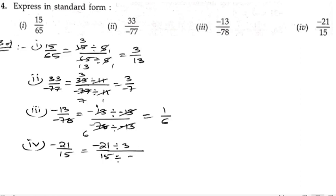3 ones are 3, 7s are 21. 3 ones are 3, 5s are 15. So the answer is minus 7 by 5. Thank you.